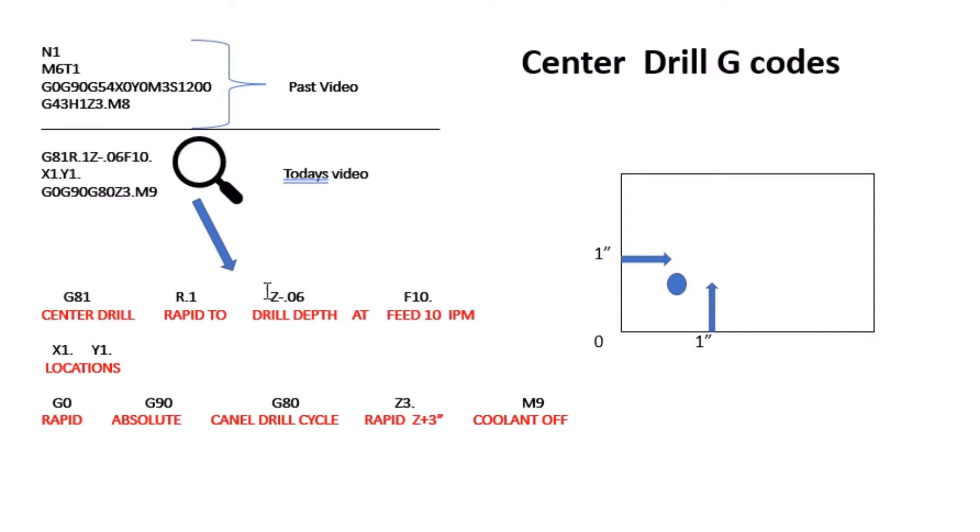The Z variable will equal your depth. I want to poke that little center drill down and get down about 60 thousandths, which is about a sixteenth of an inch, to make a little dentation there for my drill to follow to keep it perfectly in location. The F is the feed rate in inches per minute, which is what we work at.